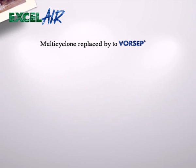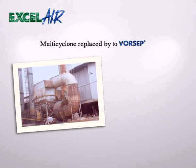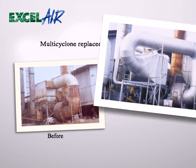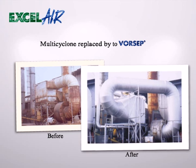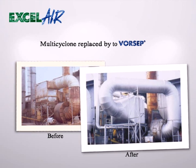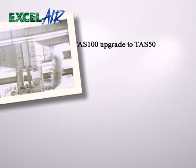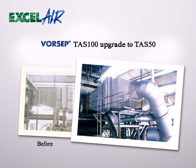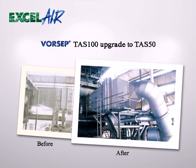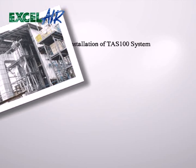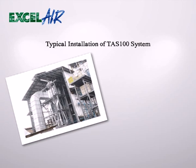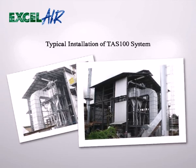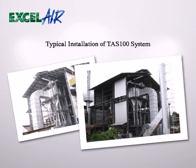Because it is compact, the VORCEP system can be retrofitted into boiler installations by removing the existing multi-cyclone. VORCEP filters are used on solid waste fuel-fired boilers burning sugar bagasse, palm oil fiber shell, wood, rice, and mixtures thereof.